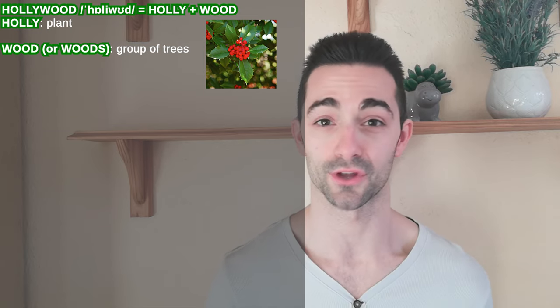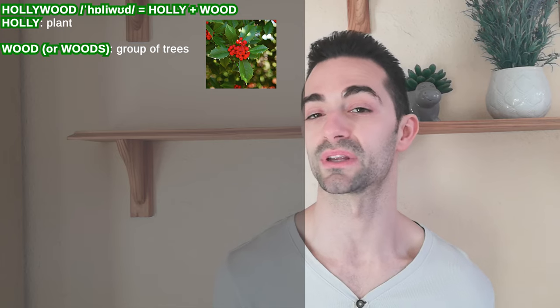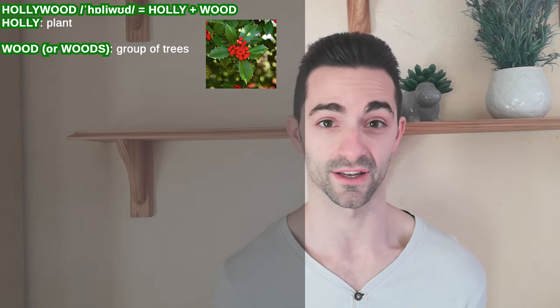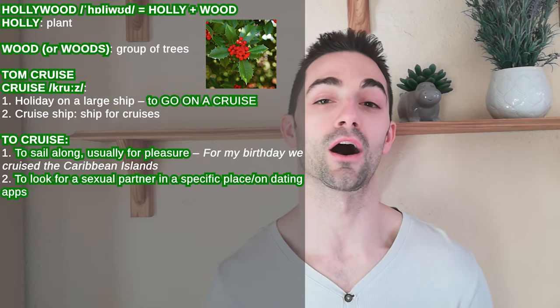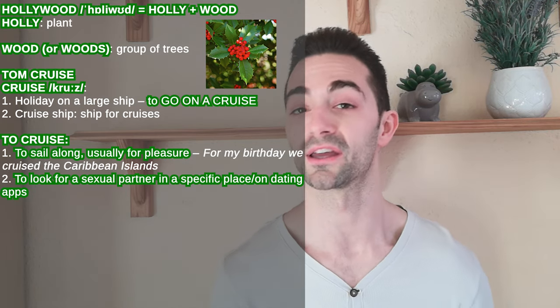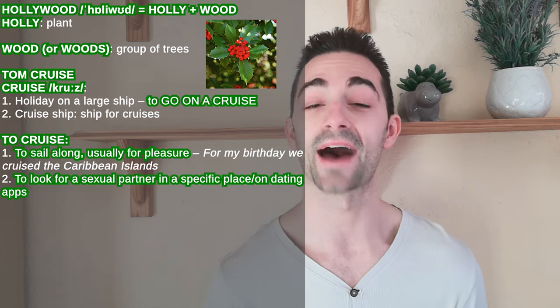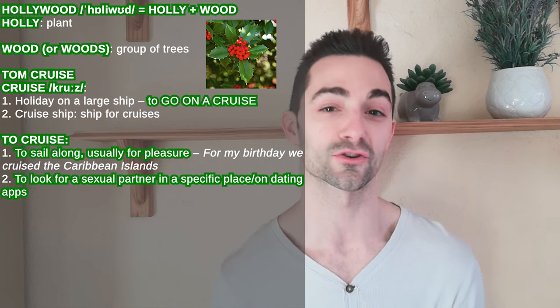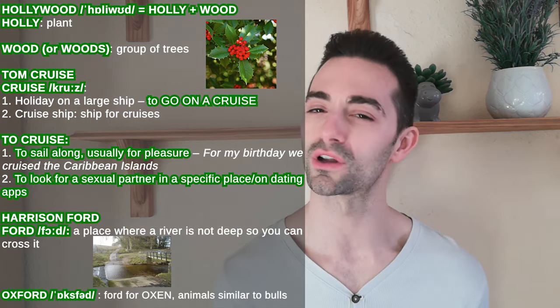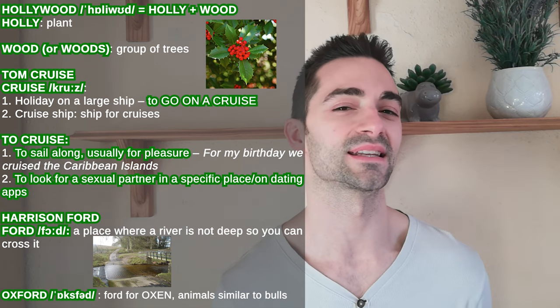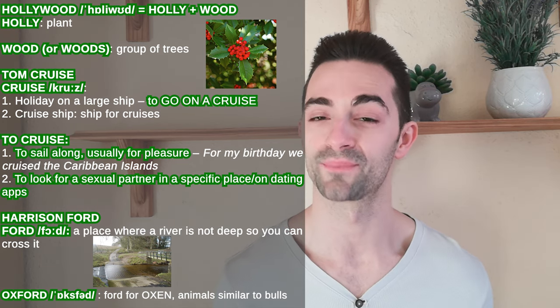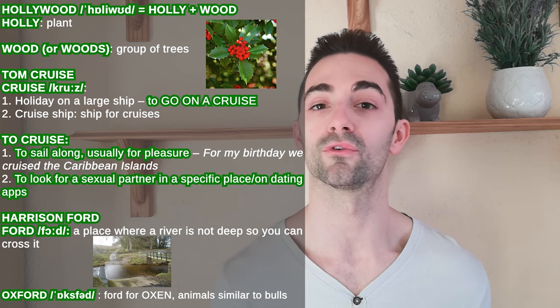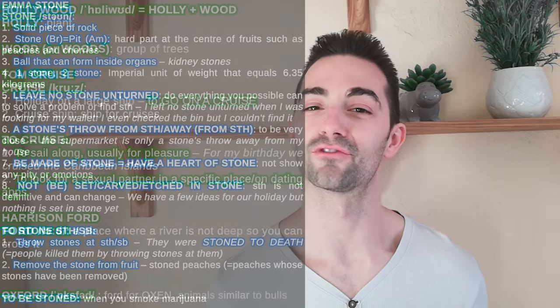And now it's time to move to Hollywood. There is a little bit of controversy as to the origin of this word, but we can see it as the combination of holly — which is a plant — and wood, which is a group of trees. Talking about Hollywood, we should mention Tom Cruise — not Cruise. Cruise is a holiday on a large ship, and as a verb it means to sail along in the sea, usually for pleasure. To cruise also means to look for a sexual partner in a specific place or on a dating app. And what about Harrison Ford? A ford is an area of a river where the water is not very deep, so you can cross it, and that's where we get Oxford from — Oxford comes from 'ford for oxen', which are animals very similar to bulls.